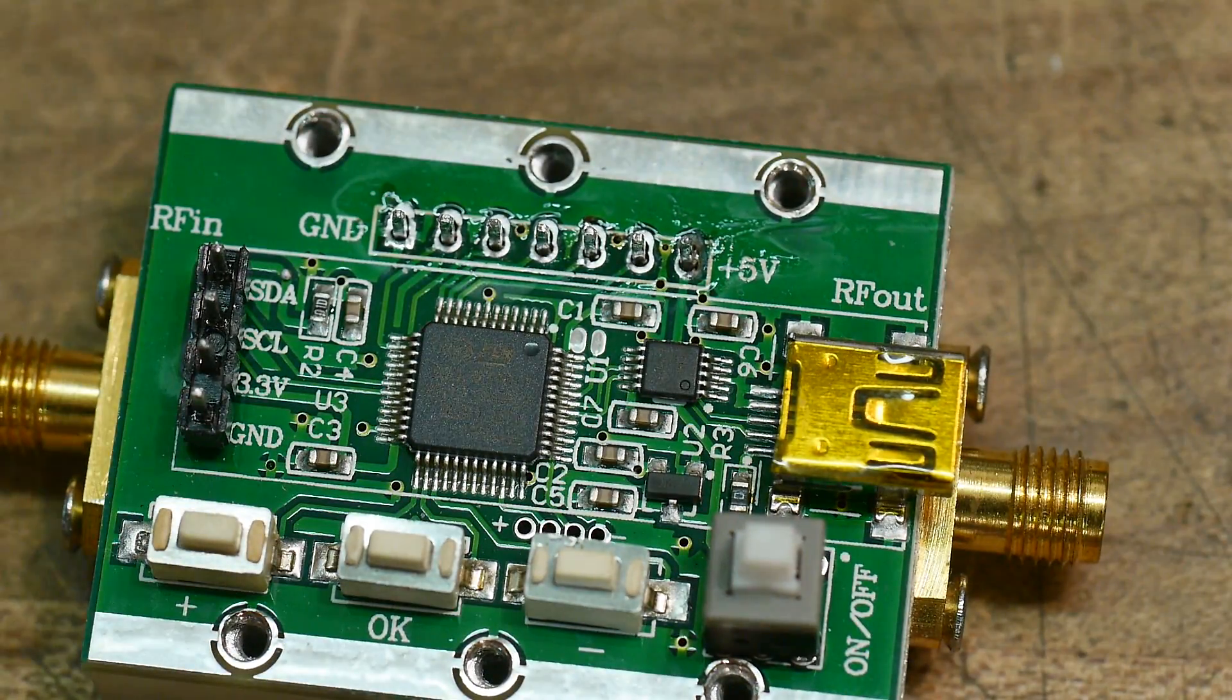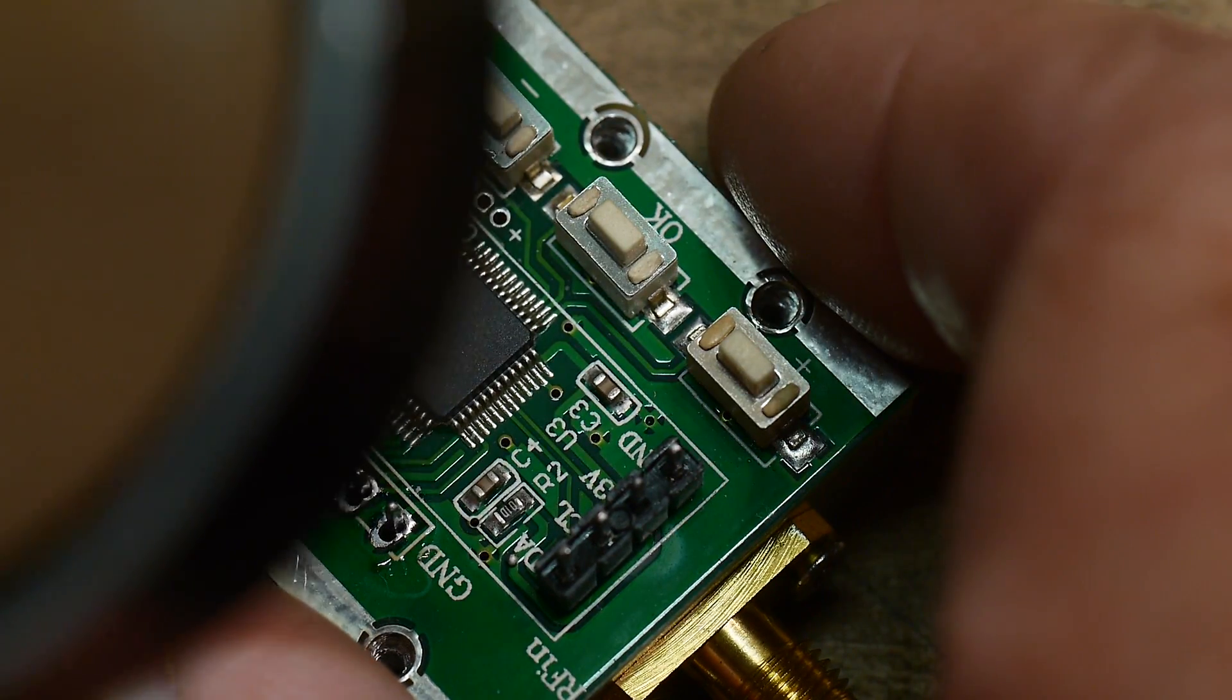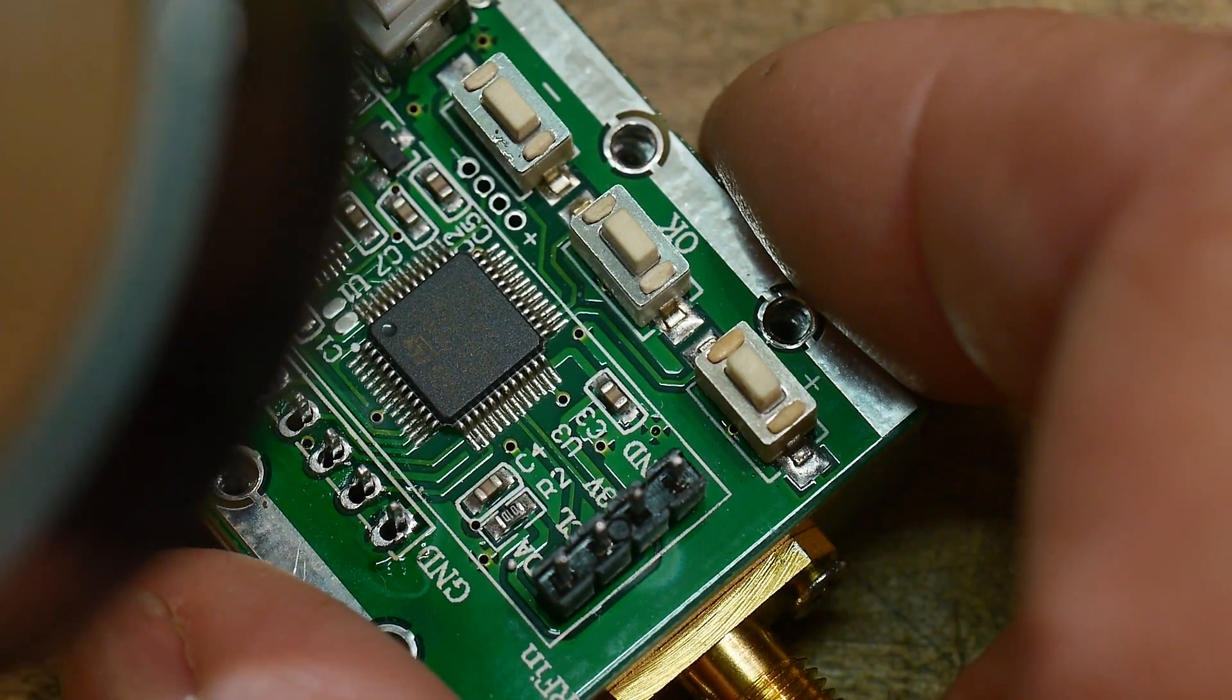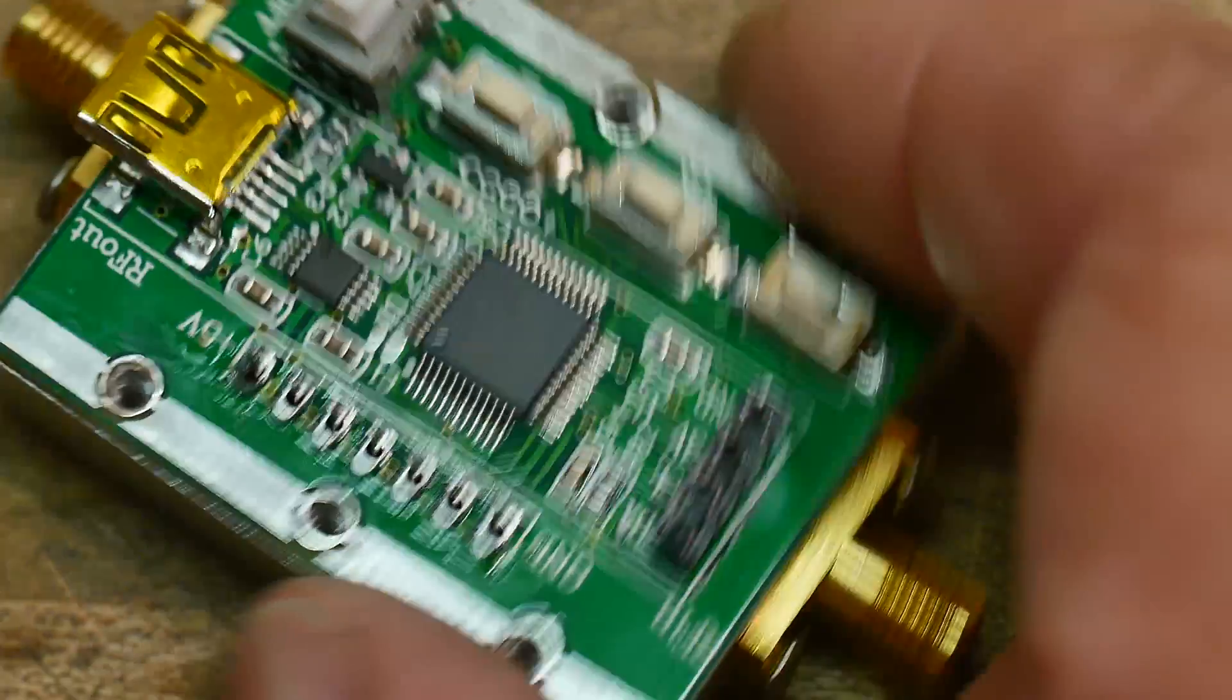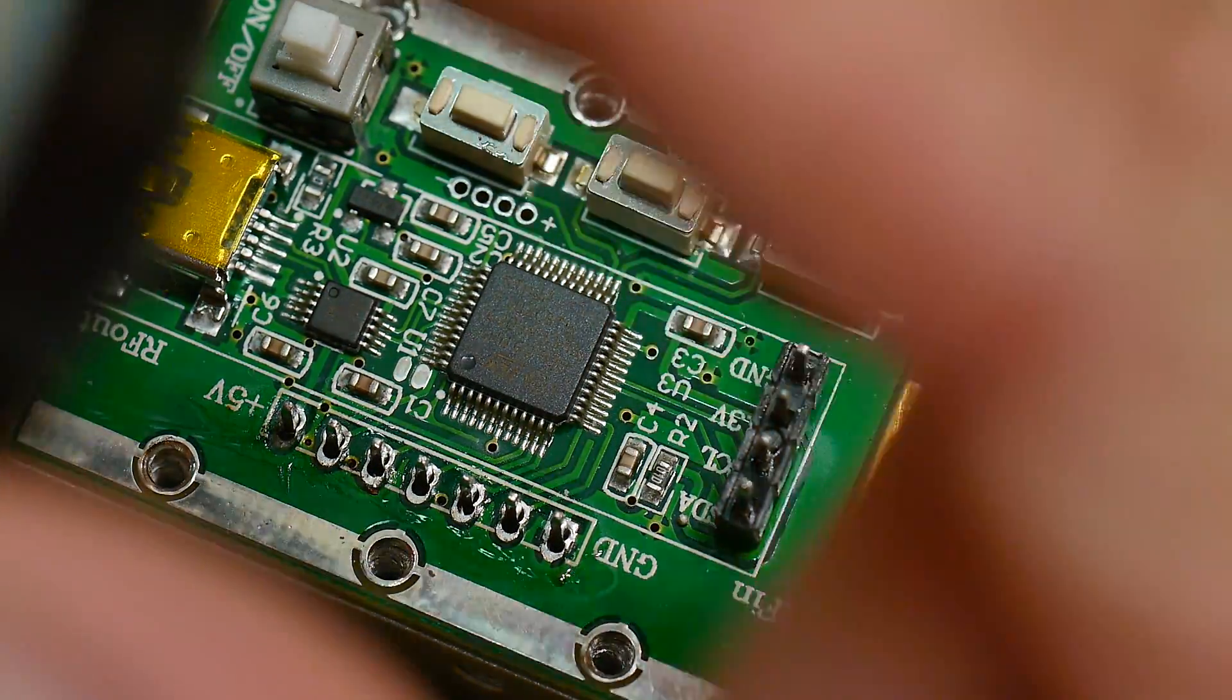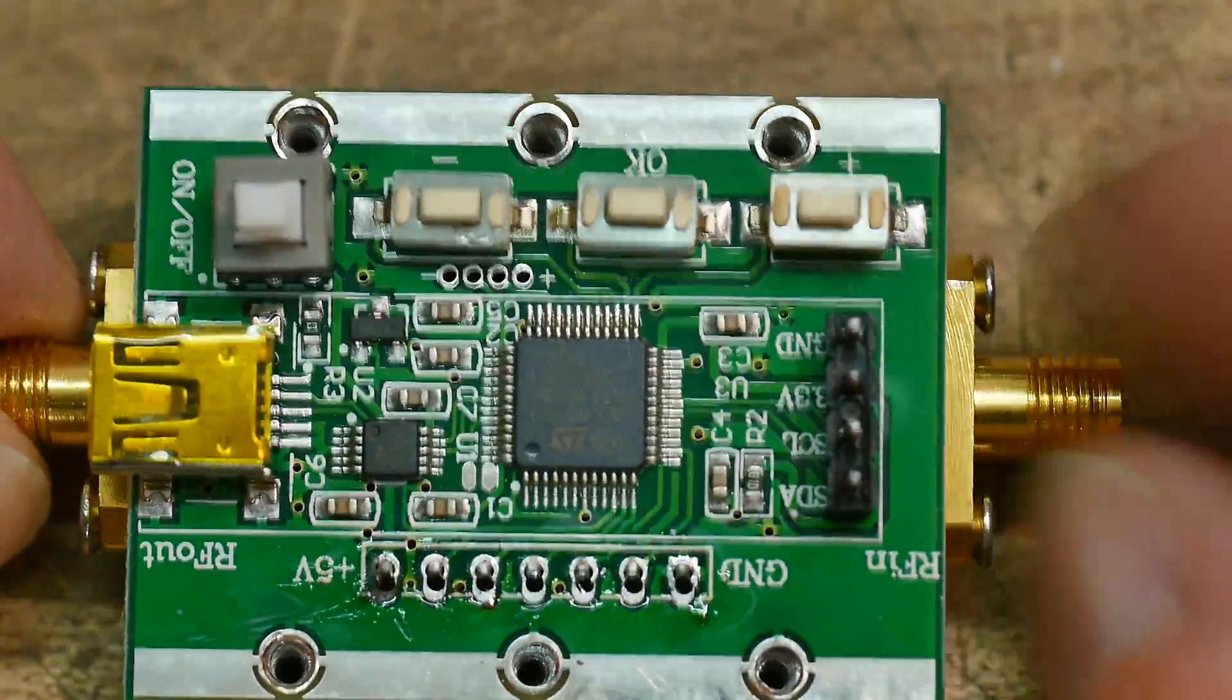A couple ICs. Let's see, this one is an STM32 of course, and the other one I think it's probably a voltage switch controller. Oh, that's really small. I'll have to put it on the microscope to read that one.